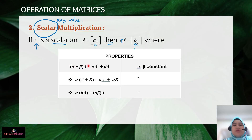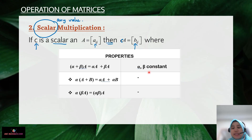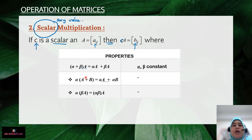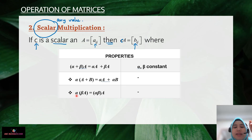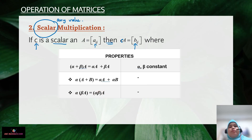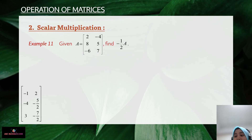Looking at the properties: you will multiply for each value, where alpha and beta are constants or scalars. For example, alpha multiplied by the quantity A plus B equals alpha times A plus alpha times B. Also, alpha times the quantity beta times A equals the quantity alpha times beta times A.